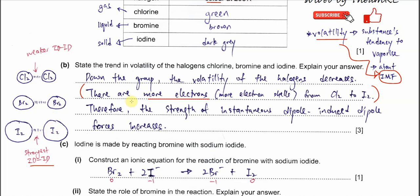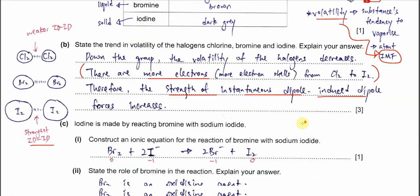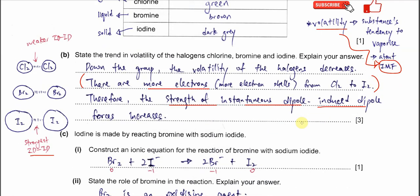The second point to mention is: when there are more electrons, the size is larger, and therefore the strength of the instantaneous dipole-induced dipole (ID-ID) forces increases. Therefore, it is harder to form gas. That concludes Part B.